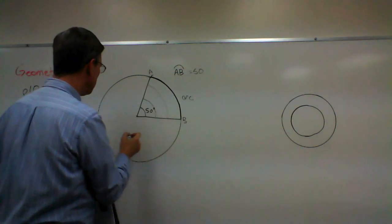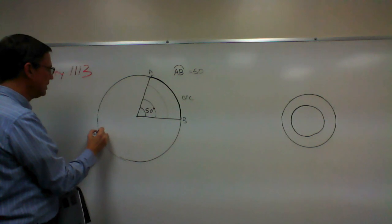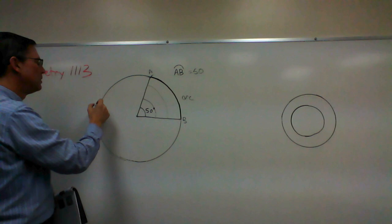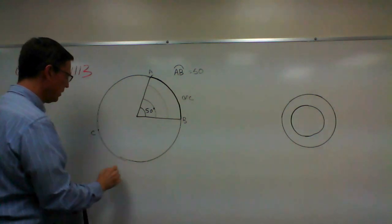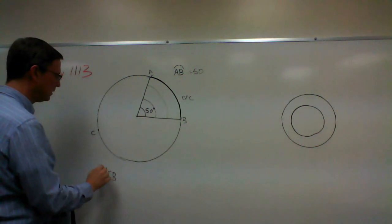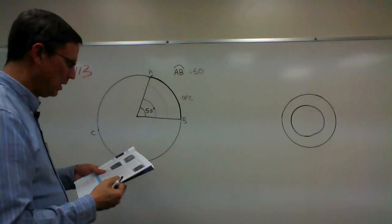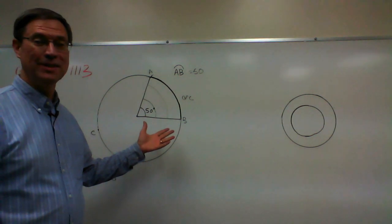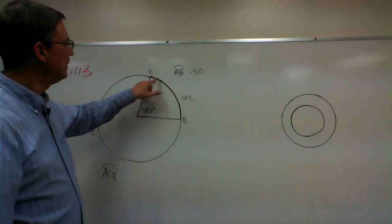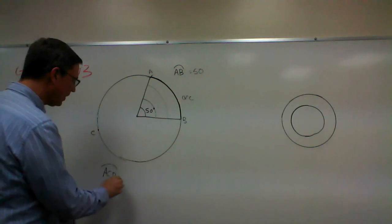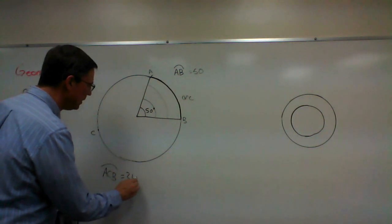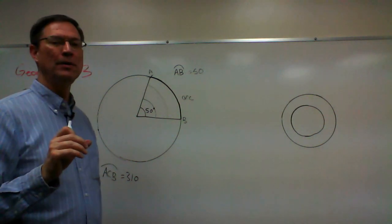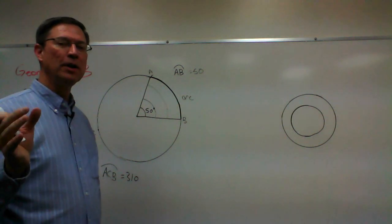Now let's think about this: if this is 50 degrees, let me put the letter C way out here somewhere. How many degrees would this big arc out here be, arc ACB? Well, how many degrees are in a circle? 360, right? So if this is 50, then this would have to be 310 degrees. A little bit of algebra, not hard, but we're sticking a little bit of algebra in here with the geometry.